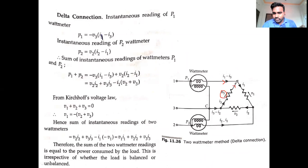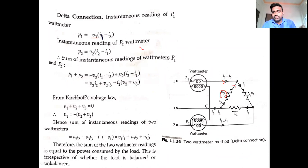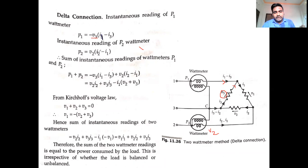The voltage is flowing in the opposite direction with respect to the current. P1 = -V3·(I1 - I3). The power rating of wattmeter 2 is P2 = V2·(I2 - I1).